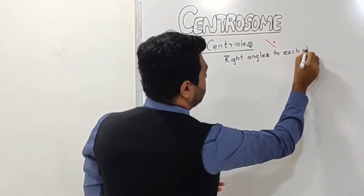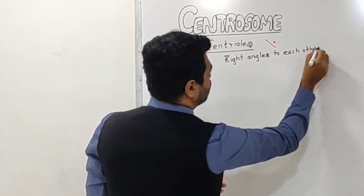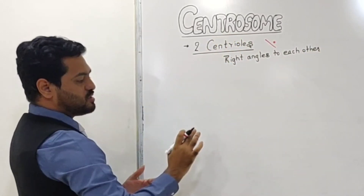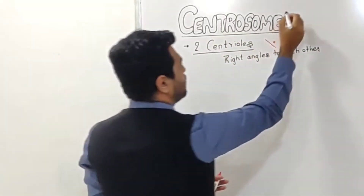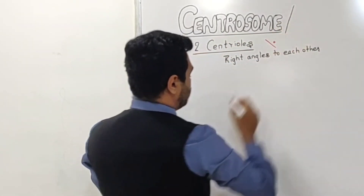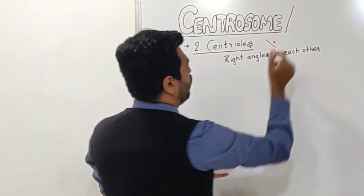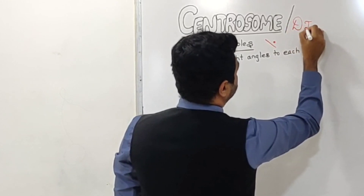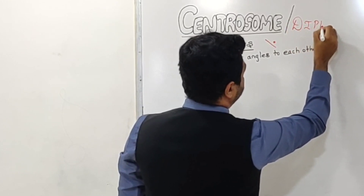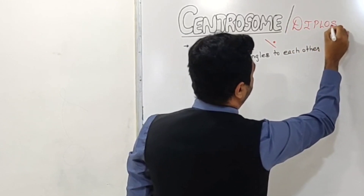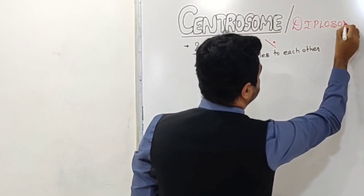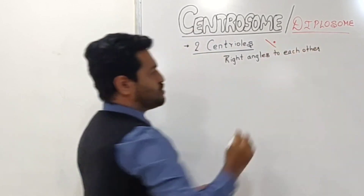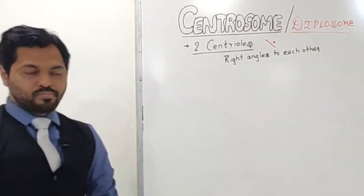Basically, one centrosome is made up of two centrioles, so the centrosome is also called a diplosome. 'Diplo' means two, so this structure is made up of two centrioles.